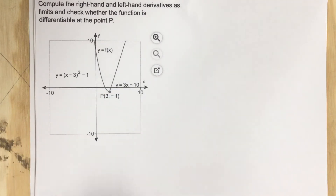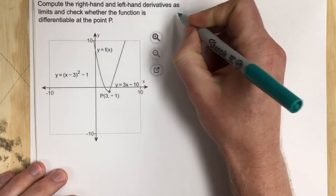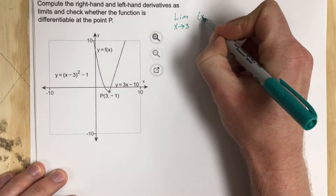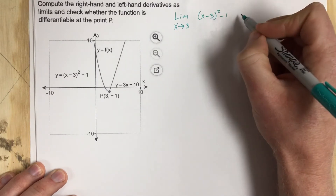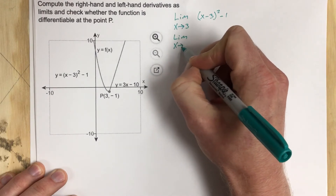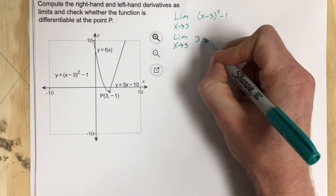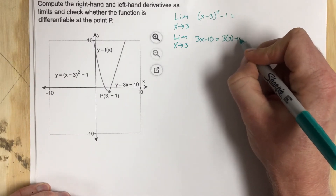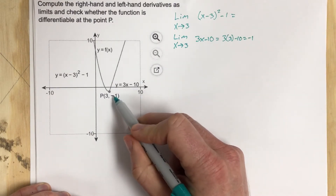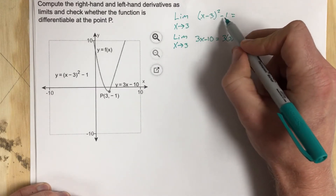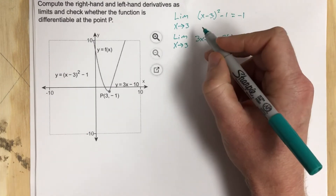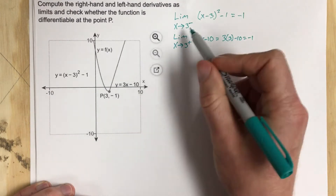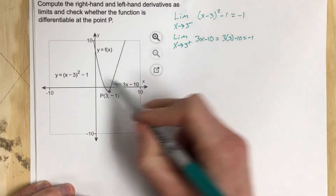If we do the straight limits — the limit as x approaches 3 for (x minus 3) squared minus 1, and the limit as x approaches 3 for 3x minus 10 — when we plug in 3 we get 3 times 3 minus 10, which is negative 1. And plugging 3 into the other: 3 minus 3 is 0, square it, we still get negative 1. So the left and right limits are equal, meaning this function is continuous here.